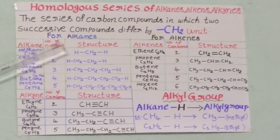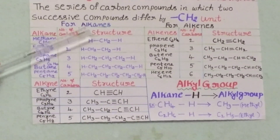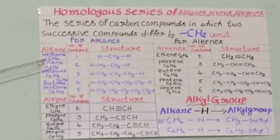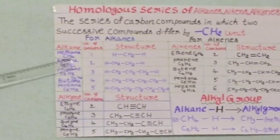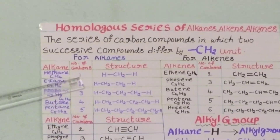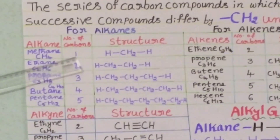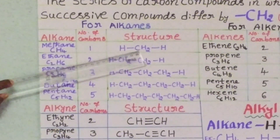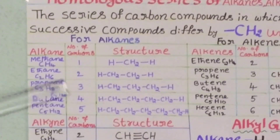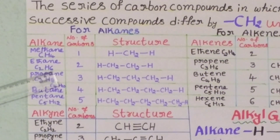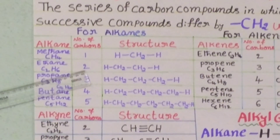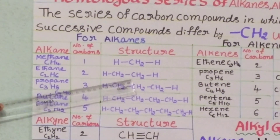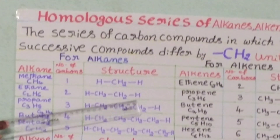Now we can explain the homologous series for alkanes. The first alkane is methane, with molecular formula CH4. The number of carbon atoms is 1 and its structure is H-CH2-H. For ethane, the molecular formula is C2H6, containing two carbon atoms, and its structure is H-CH2-CH2-H.